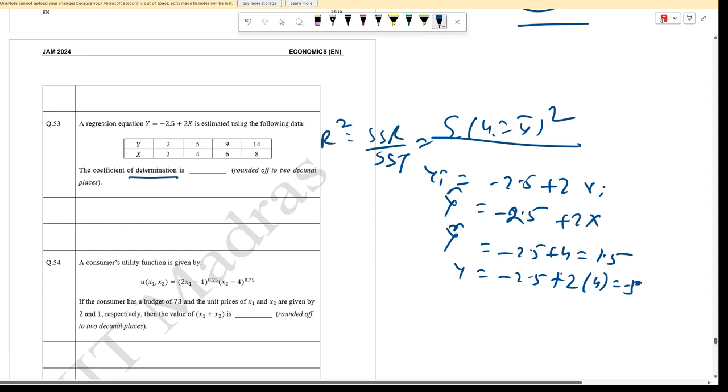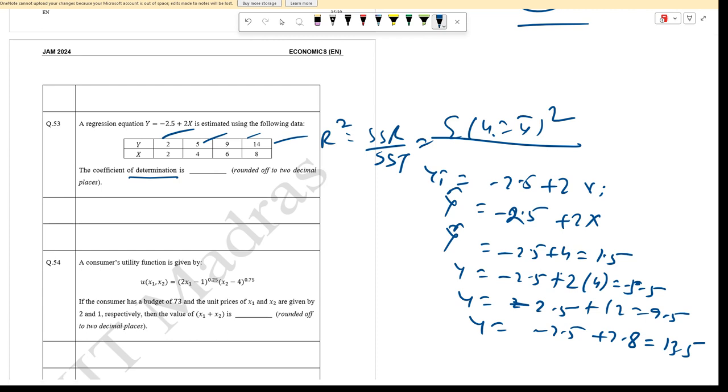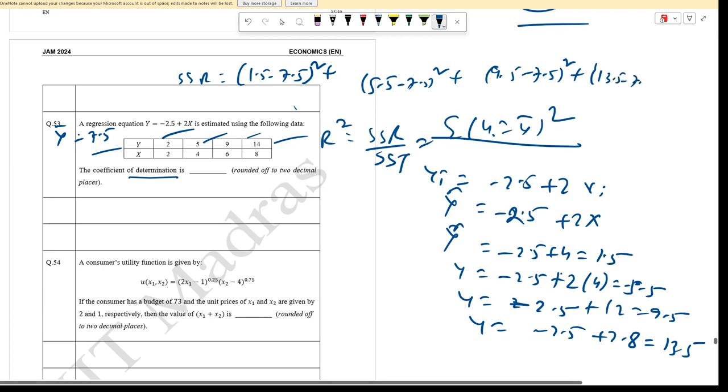For X=6, Y_hat equals 9.5; for X=8, Y_hat equals 13.5. Y_bar equals 7.5. SSR equals the sum of (Y_hat minus Y_bar) squared: (1.5 minus 7.5)^2 plus (5.5 minus 7.5)^2 plus (9.5 minus 7.5)^2 plus (13.5 minus 7.5)^2, which equals 36 plus 4 plus 4 plus 36, so SSR equals 80.